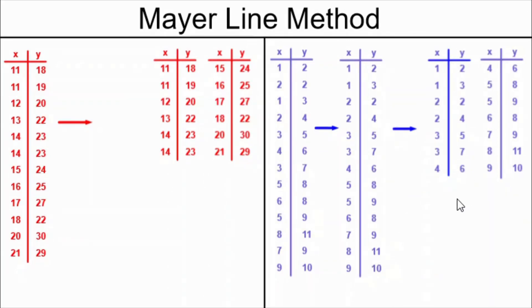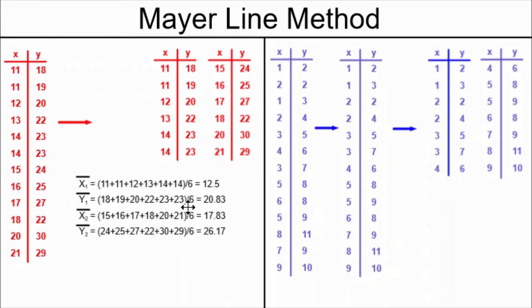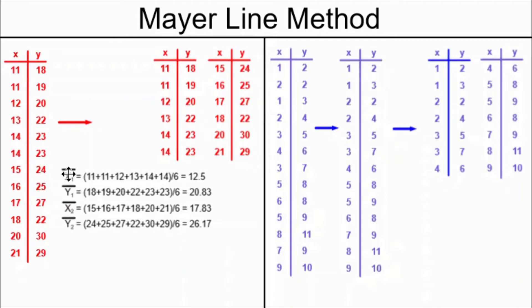The next thing that we need to do is find the x bar and y bar from each table. We're going to find what we call x bar 1, which is the average of the x values in the first table. Y bar 1 is the average of the y values in the first table.